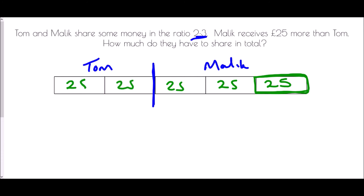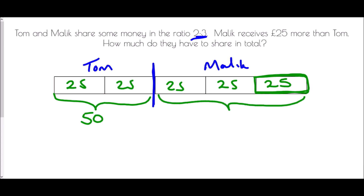Tom is getting two lots of 25, which is 50 pounds. Malik is getting three lots of 25, which is 75 pounds. In total, they received 125 pounds.